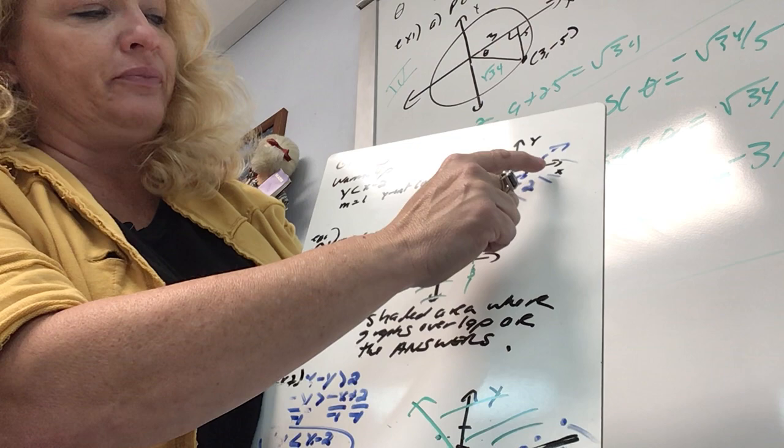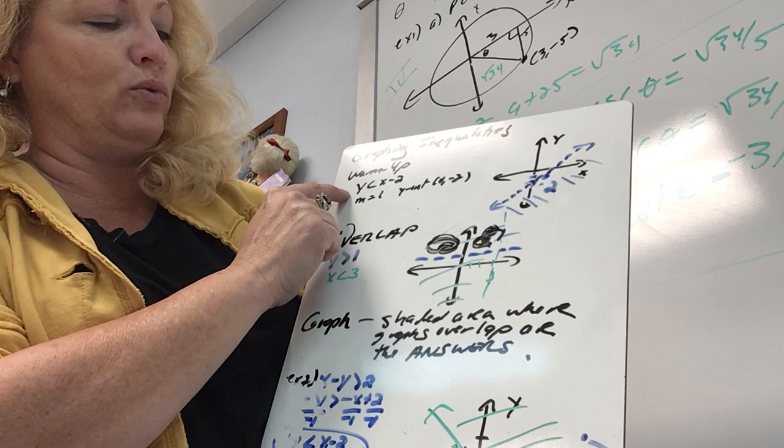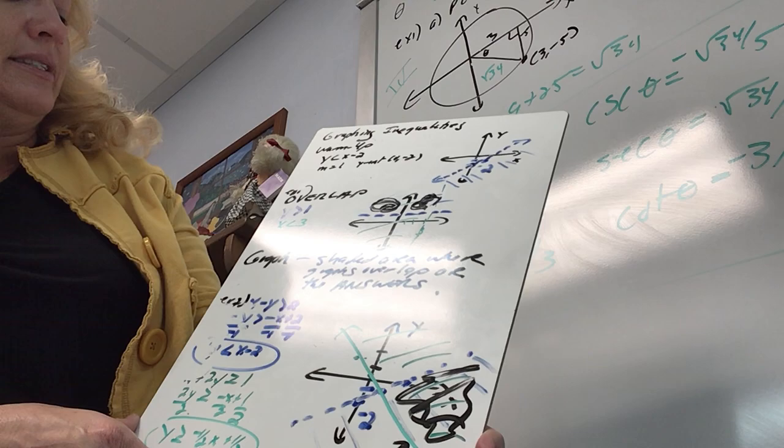So all of the answers are any of the ordered pairs that are in the shaded area. For example, I could pick 8, negative 1. If I put in 8 and I put in negative 1, I get negative 1 is less than 6. Yes, it works.